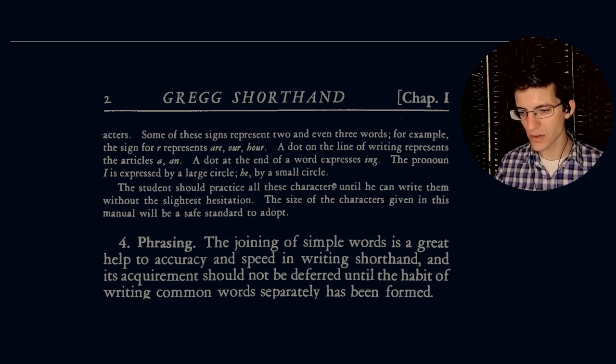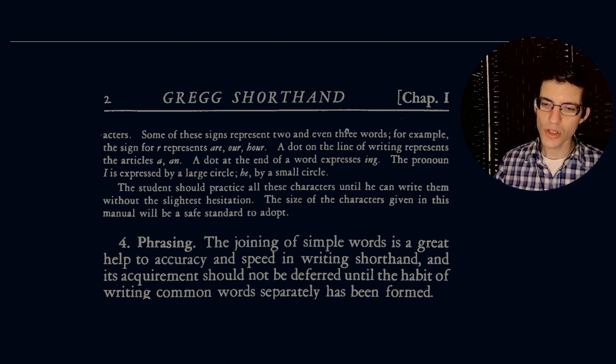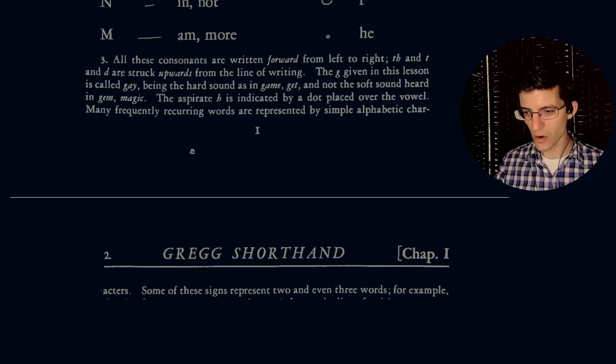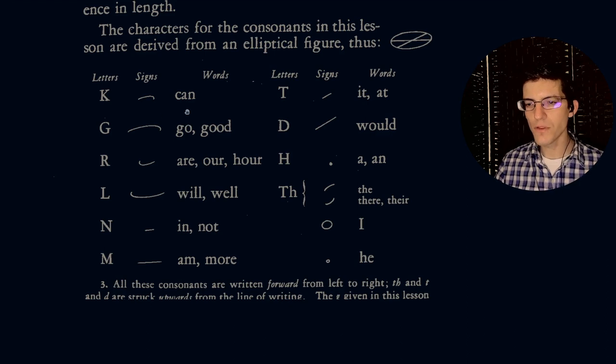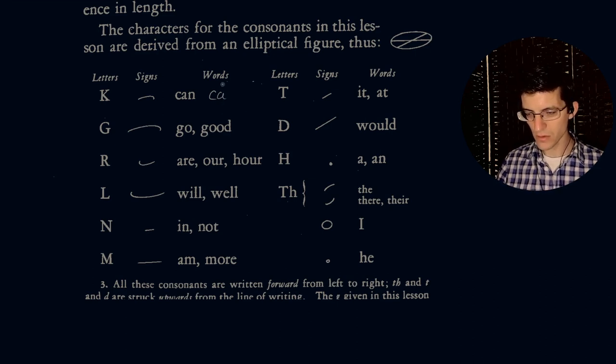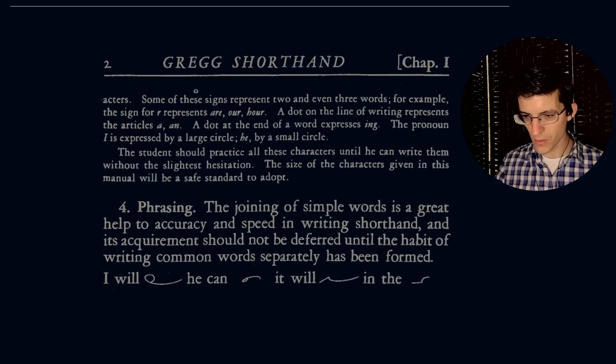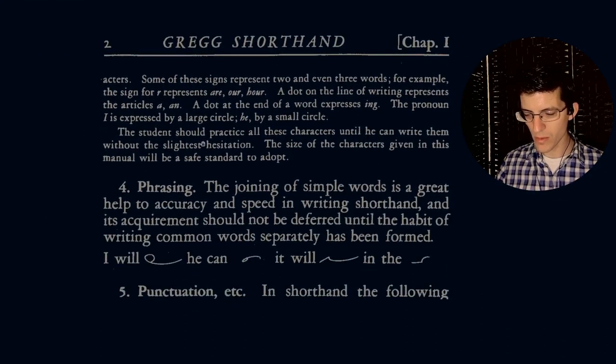The size of the characters given in this manual will be a safe standard to adopt. So when they say that the size of the characters given in this manual will be a safe standard to adopt, essentially you would take whatever this lettering size is and you would do the comparable stroke length. So the stroke for K, if you were to write out the word can by hand, the stroke should be about that long. The stroke for G should be about the length of the word good.